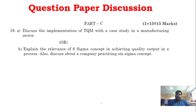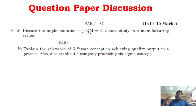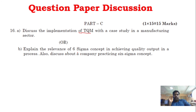For Part C, TQM implementation in the manufacturing sector is a concept question. Implementation of TQM and the design process of TQM are industry-standard questions — a basic example is more than enough. The second option in Part C is the Six Sigma concept from units 3 and 4, which you can easily attend. With good presentation and key points, you can score well in this subject.